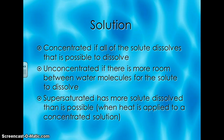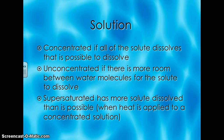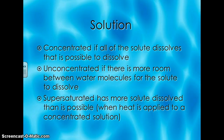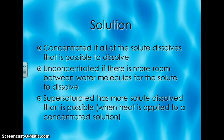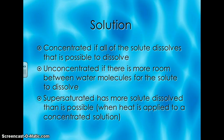We have three different ways to classify solutions: concentrated, unconcentrated, or supersaturated. A concentrated solution is when all of the solute that's possible to dissolve in the solvent has dissolved — as much as you can possibly get in. Unconcentrated solutions have more room between the water molecules for additional solute to dissolve. A supersaturated solution has more solute dissolved in it than is normally possible — for example, if you're heating tea you can dissolve more sugar in it when it's hot than when it's cold. We'll do examples and models of this in class.